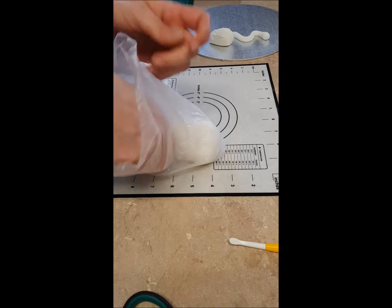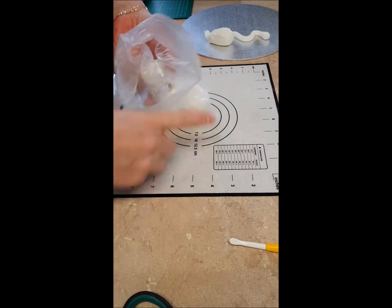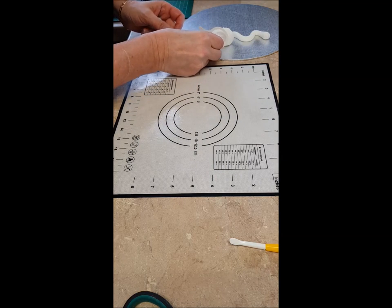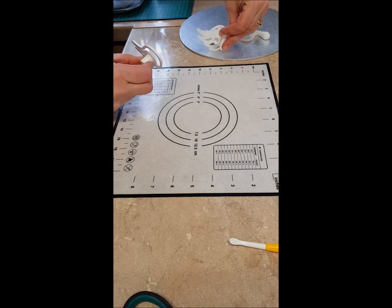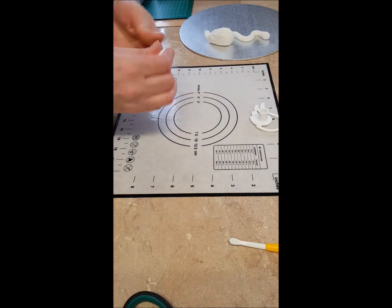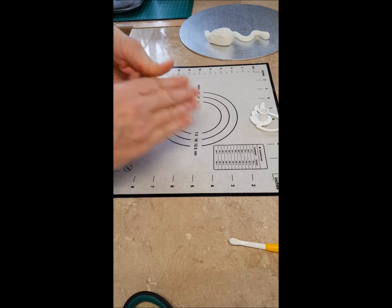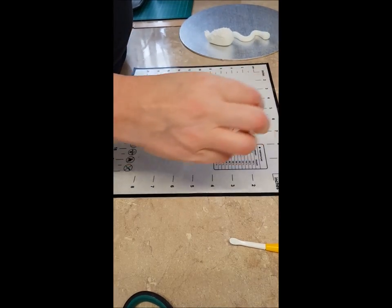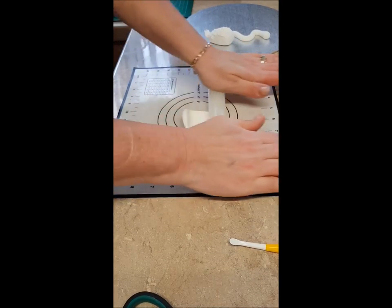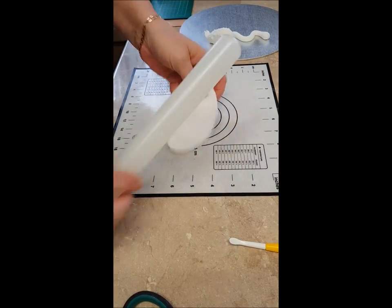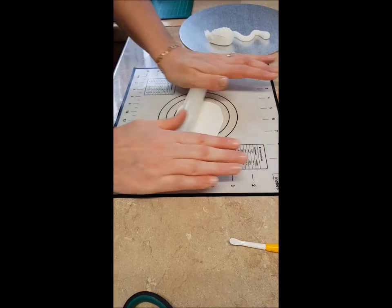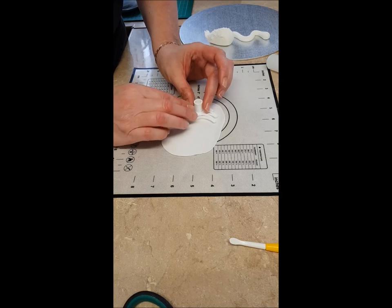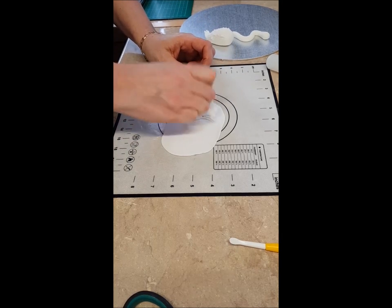Next is the wings. I'm just going to measure the wings on this. I think those are going to be a bit too big, so I'll use the next size down. Get your gum paste. Roll that out as thin as you can get it.